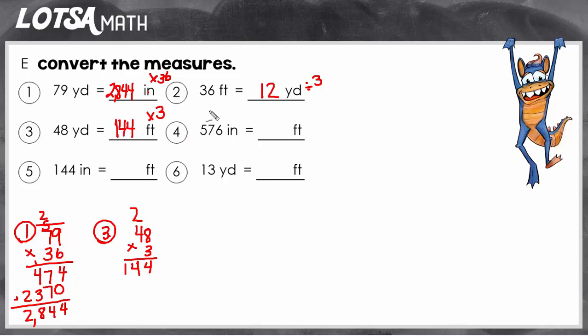Alright, we'll do one more together. This time we're going from small to large. So fly to horse divide, of course. So we're going to divide by the number of inches in a foot. So we have to do 576 divided by 12.